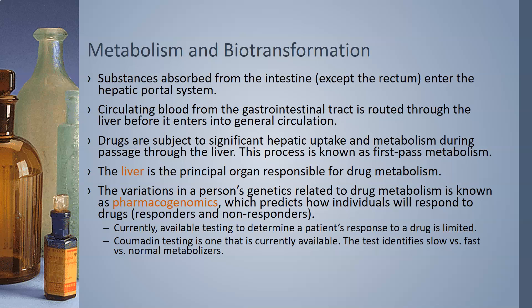Substances absorbed from the intestines enter the hepatic portal system, so any blood from the GI tract is always routed through the liver before entering general circulation — a protective mechanism in case something poisonous is ingested. Drugs are subject to significant hepatic uptake and metabolism during this passage, known as first-pass metabolism. Drug developers account for this when formulating oral drugs, because if the liver removes all of the drug during first-pass metabolism, it will have no effect whatsoever.